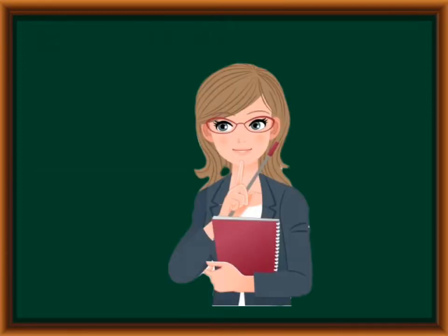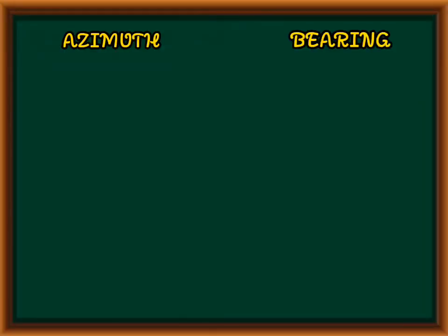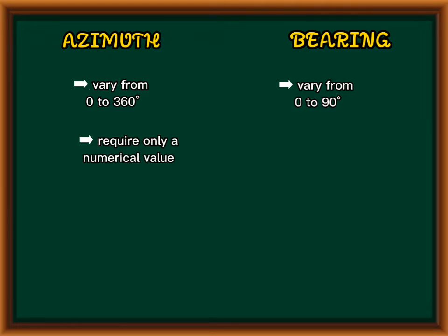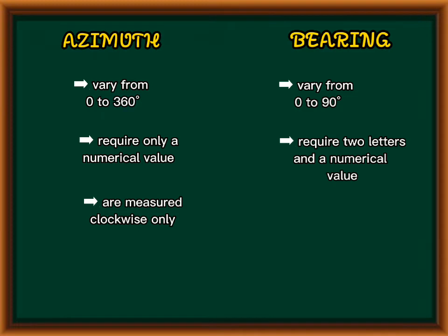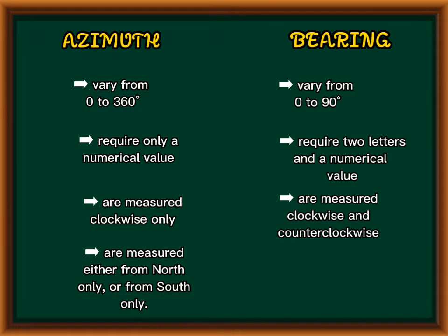So what are the comparisons of azimuths and bearings? Azimuths vary from 0 to 360 degrees; bearings vary from 0 to 90 degrees. Azimuths require only a numerical value; bearings require 2 letters and a numerical value. Azimuths are measured clockwise only; bearings are measured clockwise and counterclockwise. Azimuths are measured either from north only or from south only; bearings are measured from north and south.